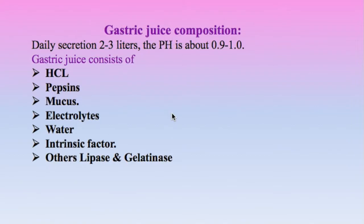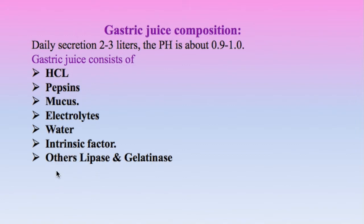Gastric juice composition: the daily secretion of the stomach is between two to three liters and the pH is very acidic, about 0.9 to 1. The gastric juice consists of gastric acid HCl, pepsin which is the proteolytic enzyme for digestion of protein, a very large amount of mucus to protect the stomach, electrolytes, water, intrinsic factor, and other substances like lipase and gelatinase.